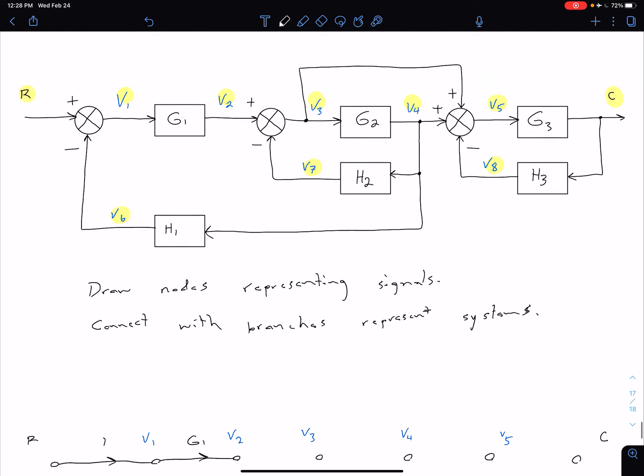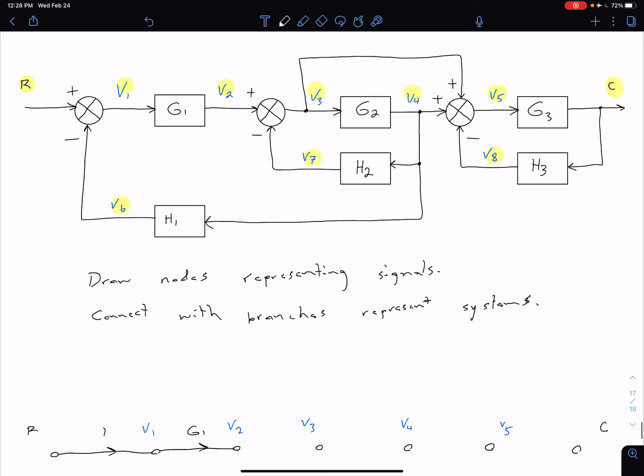So we kind of keep doing the same thing. So between three and four, we see we have just G2.